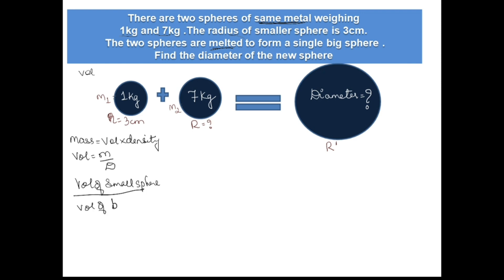This equals m1 divided by density, and m2 divided by density. I have used this formula. They are made up of same metal, so density will be same. Cancel this, so you get m1 by m2.